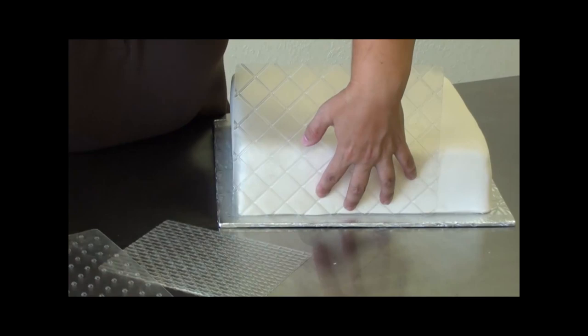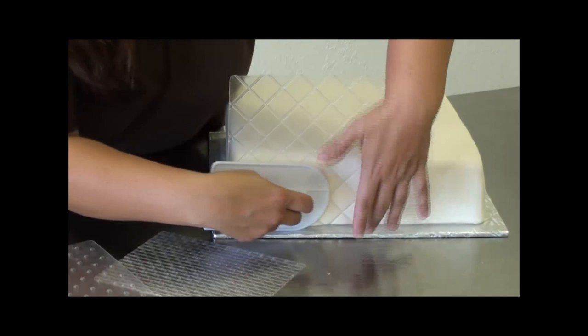Then you can come back with your fondant smoother and give a good amount of pressure all over the mat. You'll notice I stopped short of the end of the mat. I don't want this line to put an indention into the cake.